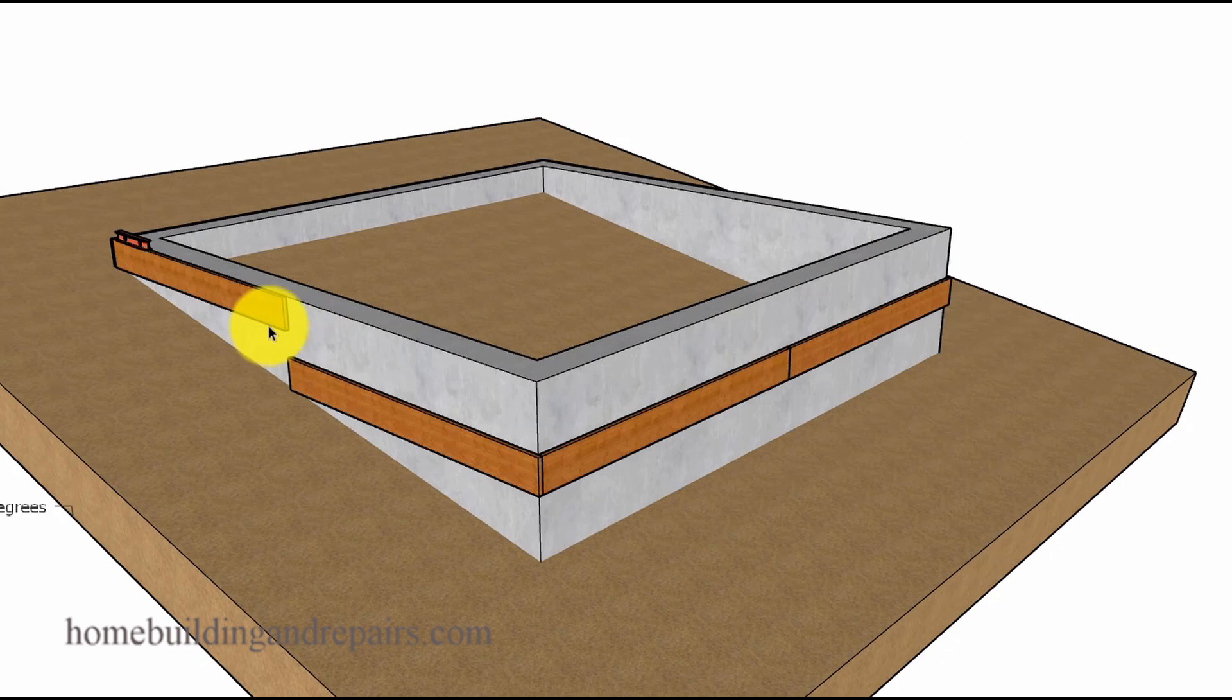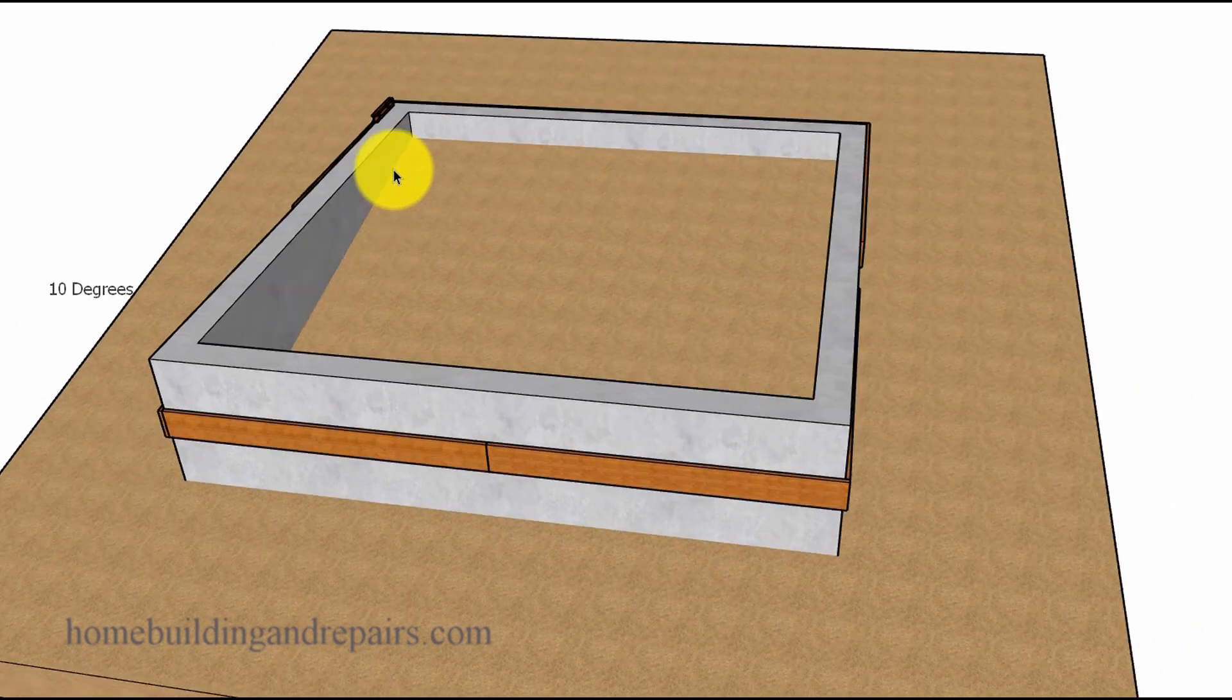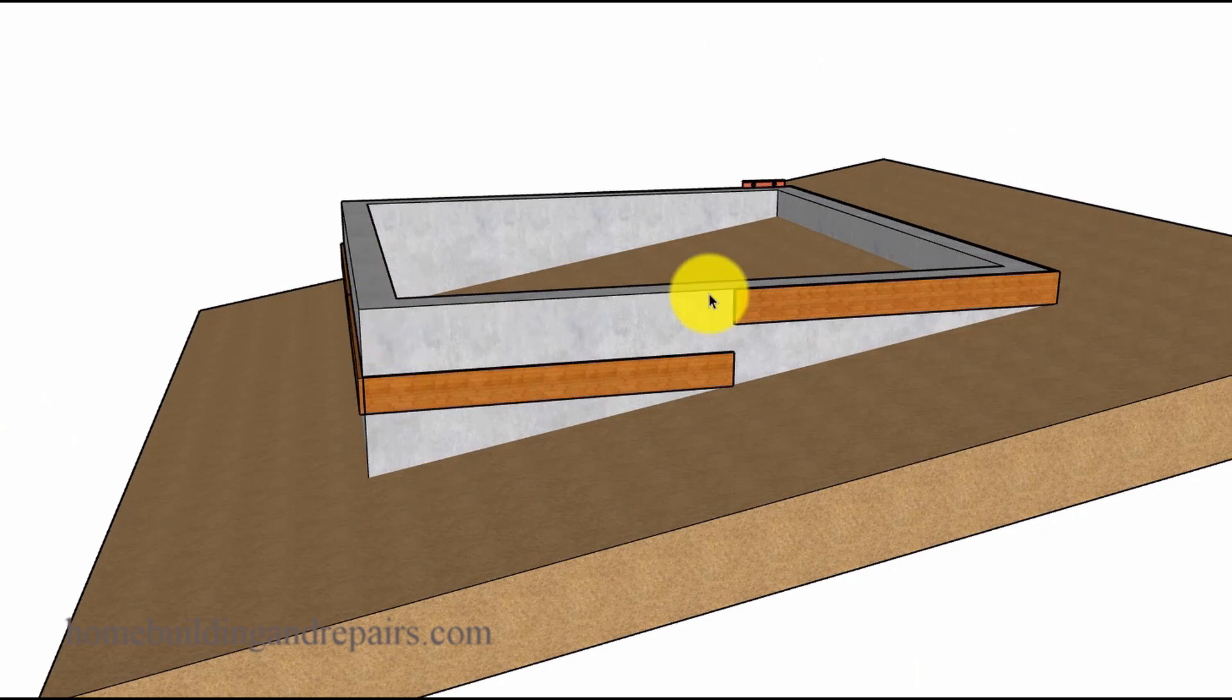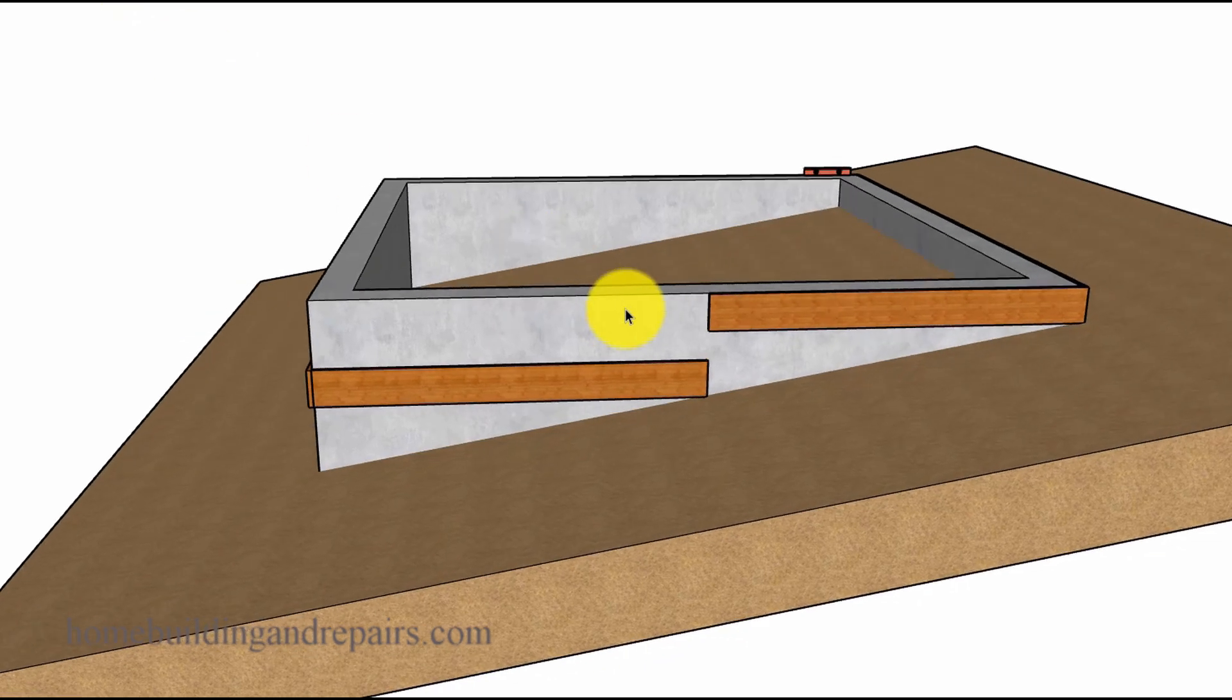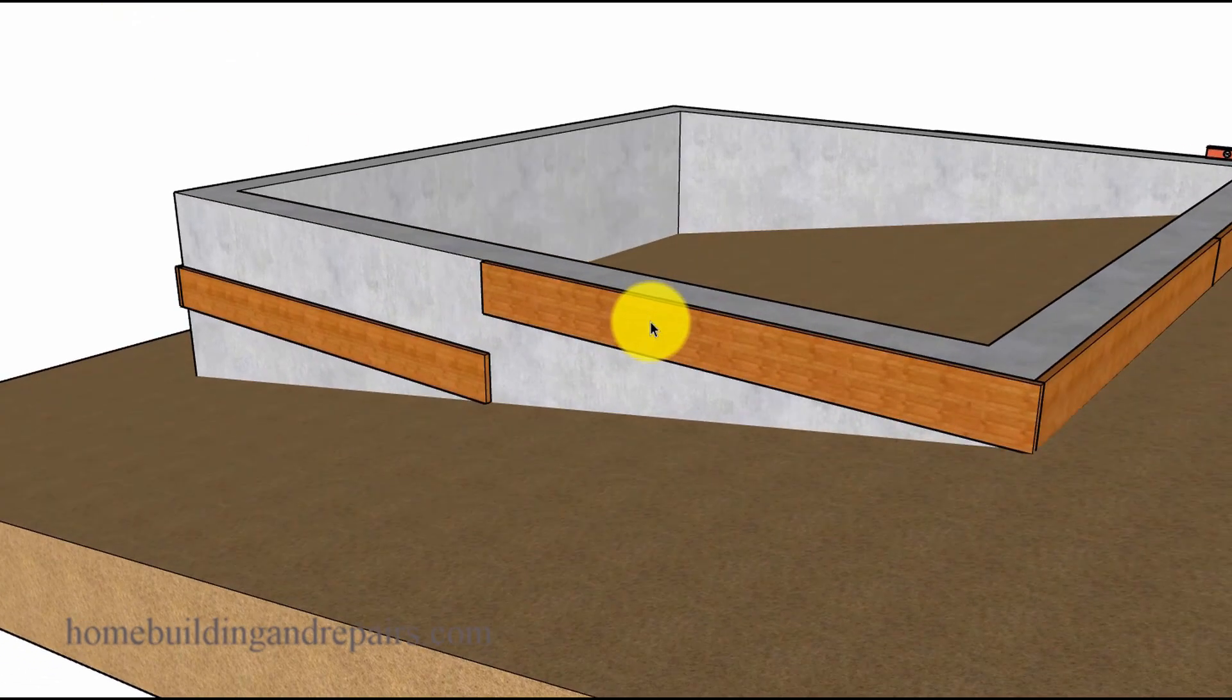That would look something like this if we were going to step it down once in the middle in order to reduce this amount of concrete and replace it with wood framed walls to create a level floor. Here you can see where we took the front section or the front form boards and simply lowered it to where the bottom of the form touches the ground. So here we have stepped down the front area.